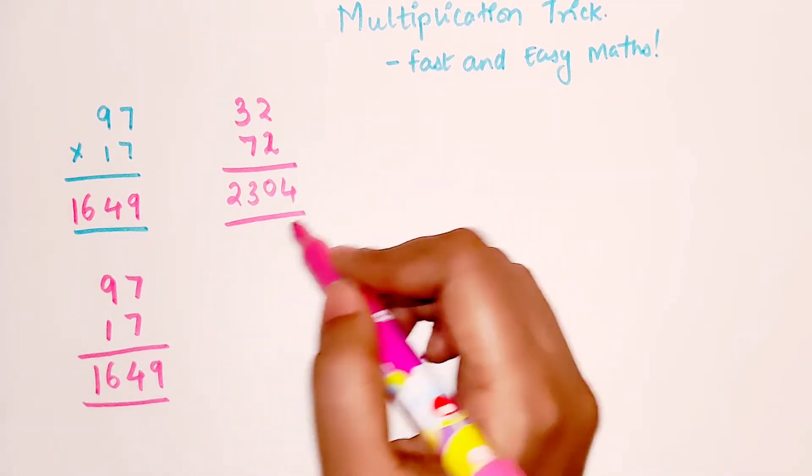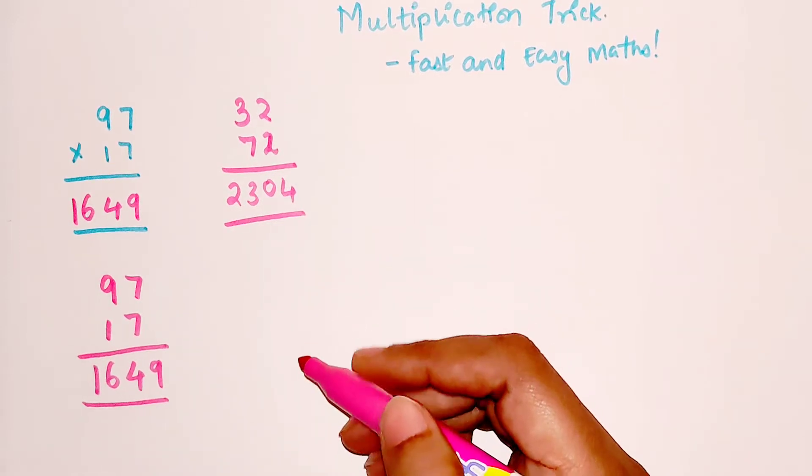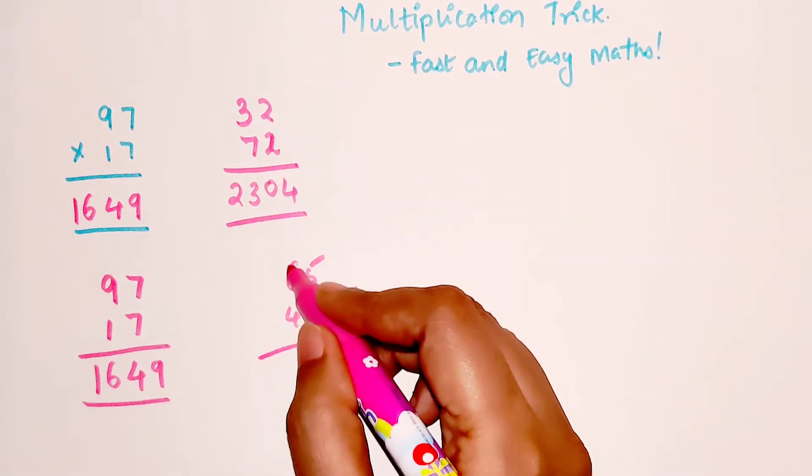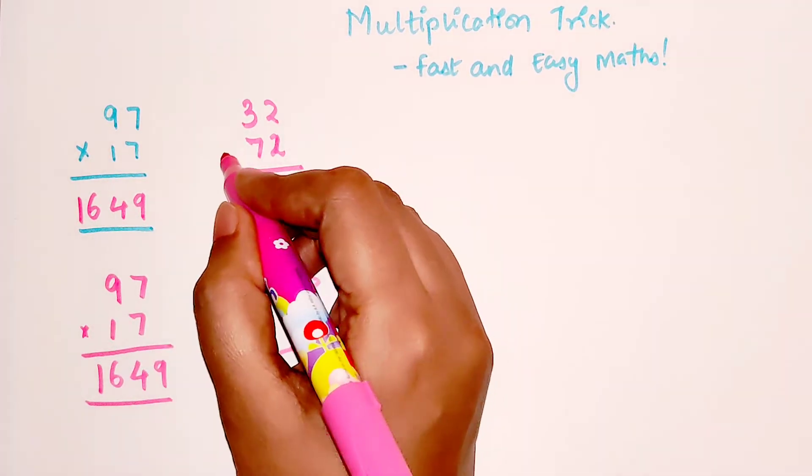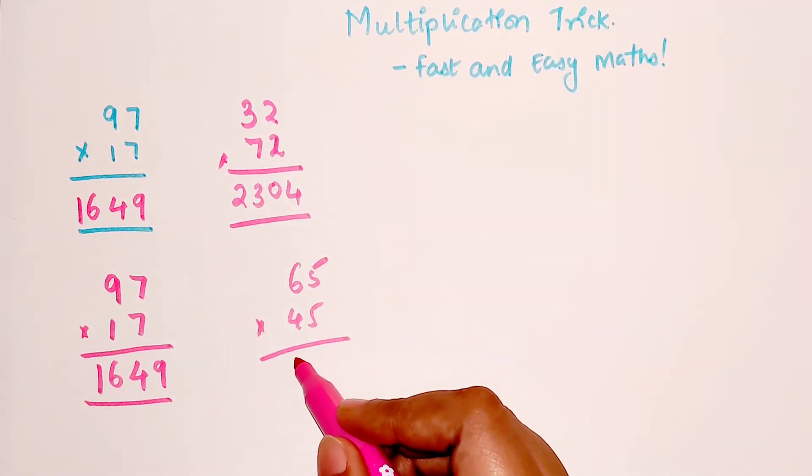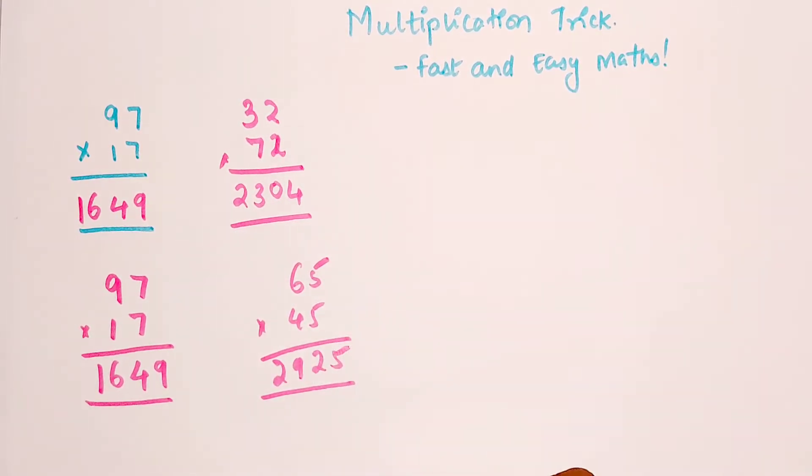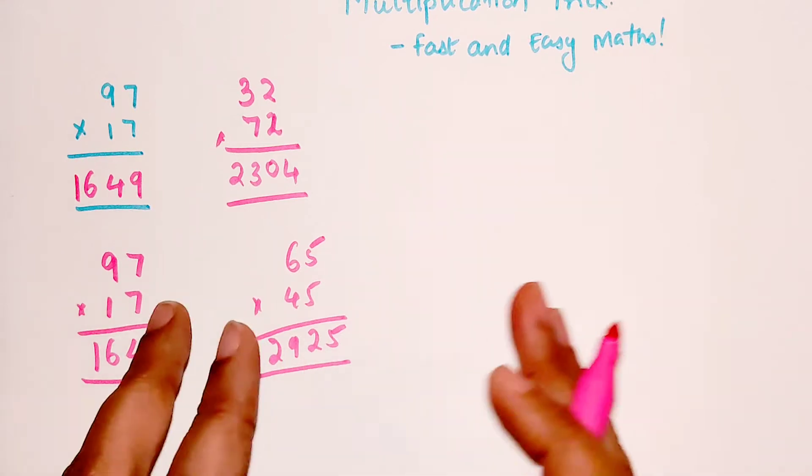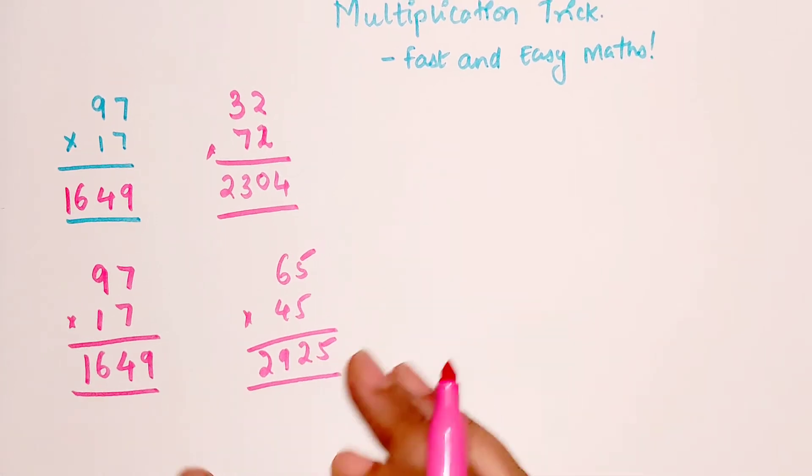Let's try one more, 65 into 45. 6 into 4 gets you 24 plus 5 gets you 29, and then 5 square which is 25. So you saw how easy this trick is. If you like the way I'm explaining, please go ahead and hit the like button because that gives me tremendous amount of encouragement in doing these kind of videos.